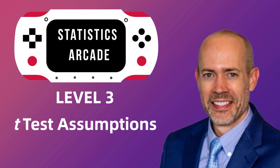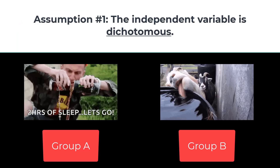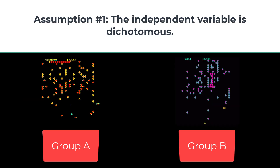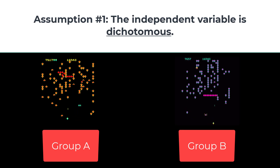The Independent Measures T-Test has four assumptions. Assumption number one: the independent variable is dichotomous, meaning divided into two parts. There is always a Group A and a Group B in an Independent Measures T-Test.